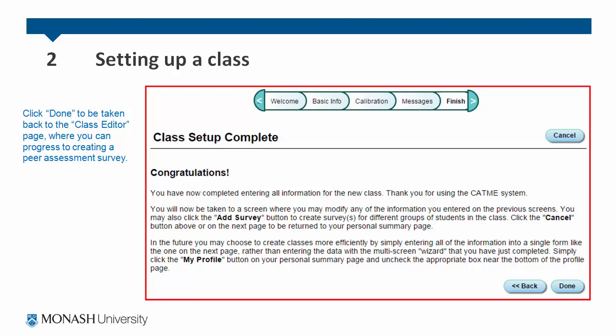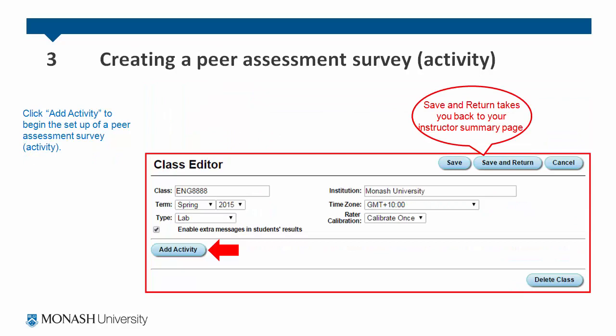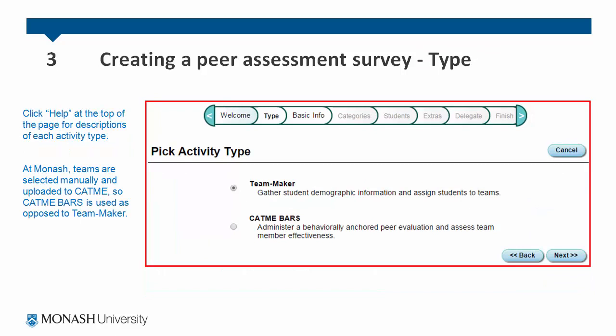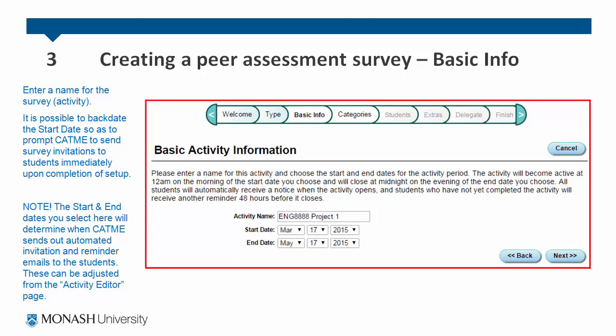You can now progress to creating a peer assessment survey. In the class editor page, click add activity to begin the setup. Follow the process to creating a peer assessment survey and click next to continue. There are two activity types — click help at the top of the page for descriptions of each. At Monash University, teams are selected manually and uploaded to CATME, so we use CATME bars as opposed to Teammaker. With CATME bars selected, enter a name for the survey. It's possible to backdate the start date so that CATME will send survey invitations to students immediately upon completion of setup. The start and end dates you select will determine when CATME sends automated invitation and reminder emails to the students. You can adjust these from the activity editor page later on.